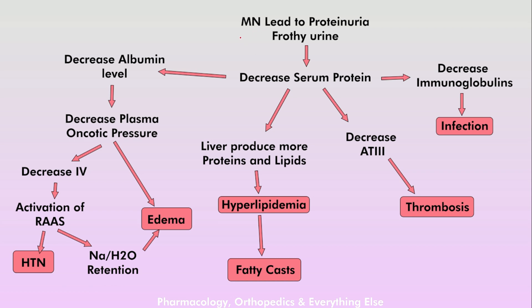Now let's discuss pathophysiology. The thickened glomerular basement membrane impairs filtration, leading to proteinuria and frothy urine. This decreases serum proteins. Loss of immunoglobulins makes the individual more susceptible to infections. Loss of coagulation and anticoagulation proteins — particularly antithrombin 3, which deactivates active forms of factors 2, 9, 10, 11, and 12 — makes the individual more susceptible to thrombosis.